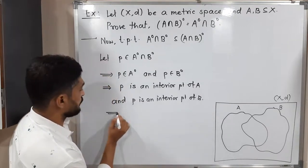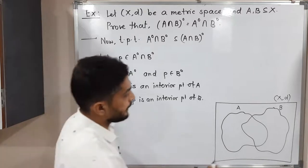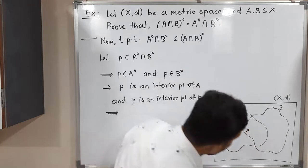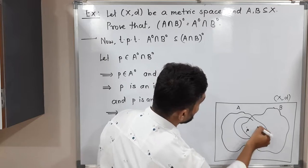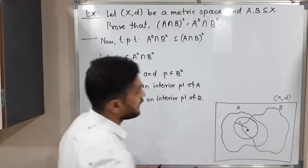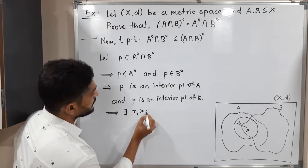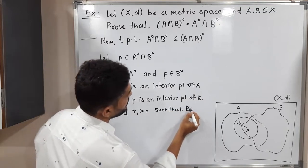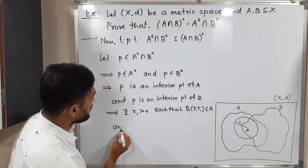Now we can use the definition of interior point. Since P is an interior point of A, it is possible to find a ball around P which is a subset of A. So there exists R1 greater than 0 such that the open ball with center P and radius R1 is a subset of A.